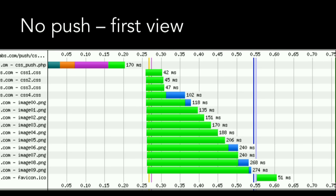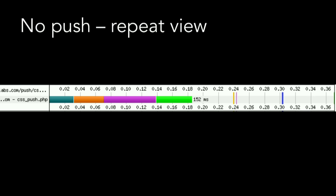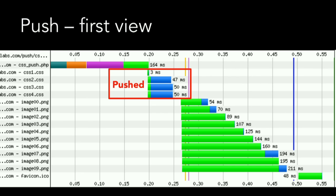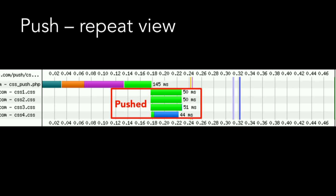Look at what happens without push: a cold cache request grabs a page, the first four requests are CSS files, everything else is images with good cache control headers. A repeat view shows nothing happens except the HTML I chose not to cache. That's great. Now look with push: I took those four CSS files and pushed them — that's the first four requests. Then I do a repeat view and they get pushed again. This is bad. Even if the browser ends up using the CSS files from its cache, I've put more content on the wire, which is not good for bandwidth usage.